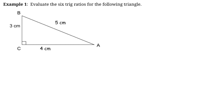Let's work on an example. For this question, we need to evaluate the six trig ratios for angle B in a triangle. Angle B is going to be our reference. Let's label all three sides: the hypotenuse is always across from our right angle, the opposite side is opposite angle B, and the adjacent side is right beside angle B.